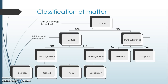A colloid has particles large enough that if you shine a light through it, you can see those particles. An alloy is two or more metals combined together to enhance one or both metals' properties. A heterogeneous mixture can also be a suspension — a liquid holding solid particles that are suspended within it.